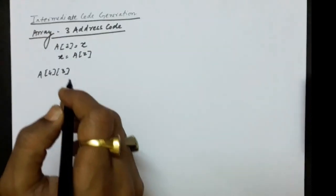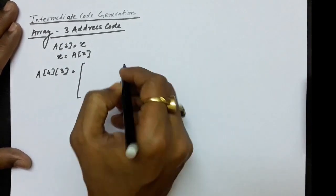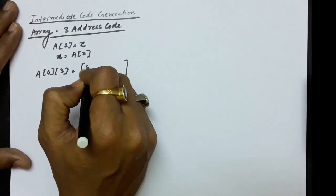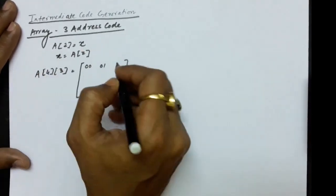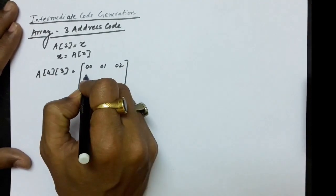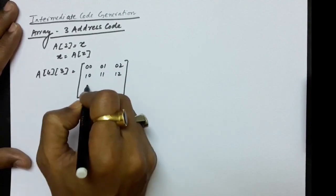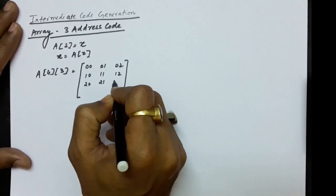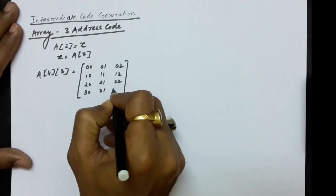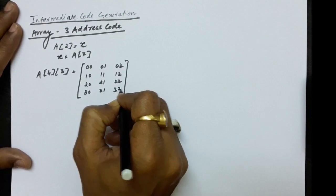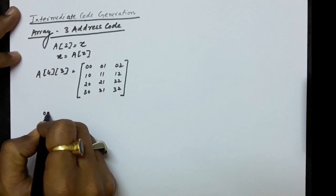The usual arrangement of this is in the form of indices: [0][0], [0][1], [0][2] — it is 4 rows and 3 columns. After this: first row zero column, first row first column, first row second column, second row zero column, second row first column, second row second column, third row zero column, third row first column, third row second column.